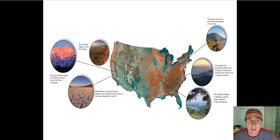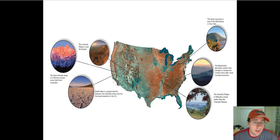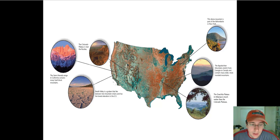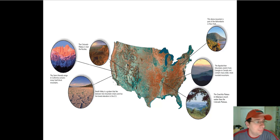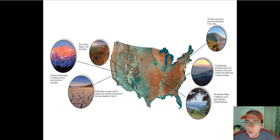For example, in the U.S. you have Dome Mountains in New York, the Appalachian Mountains from Georgia to Canada, the Ouachita Mountains somewhere in Arkansas, the Sierra Nevada, and the Rocky Mountains in California. You also have the Colorado Plateau near the Rockies.